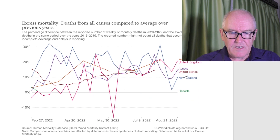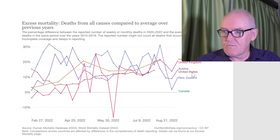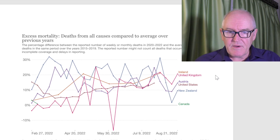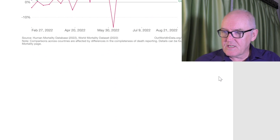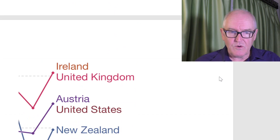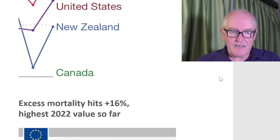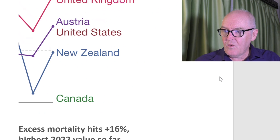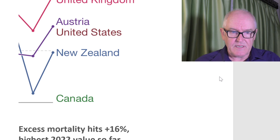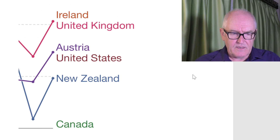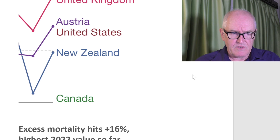For example, the United States is at about 12% at the moment. Looking at current excess deaths in order: Ireland, the United Kingdom, Australia, the United States, New Zealand, and Canada — though the Canadian data is a bit non-existent on Our World in Data, at least.